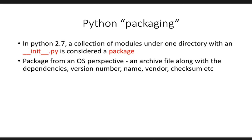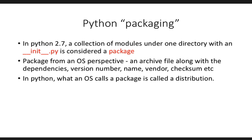In Python, what an operating system calls a package is called a distribution. Your Python package itself is just a folder with a bunch of Python modules and an __init__.py file, whereas what your operating system calls a package is what we call a distribution. Libraries generally get bundled into packages, and libraries may depend on other packages. Essentially the whole working system together, including things that could be in the standard library, forms a Python package.